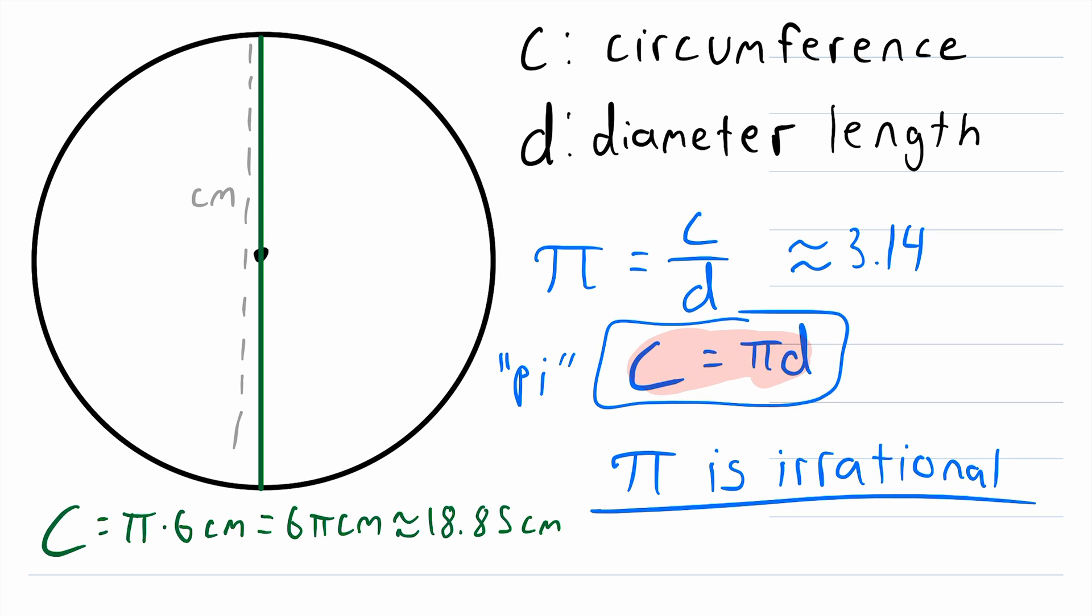Let me leave you with an example to try on your own. Let's say that the diameter length of this circle is 12 centimeters. Then what is the circumference of the circle? Let me know what you get down in the comments.